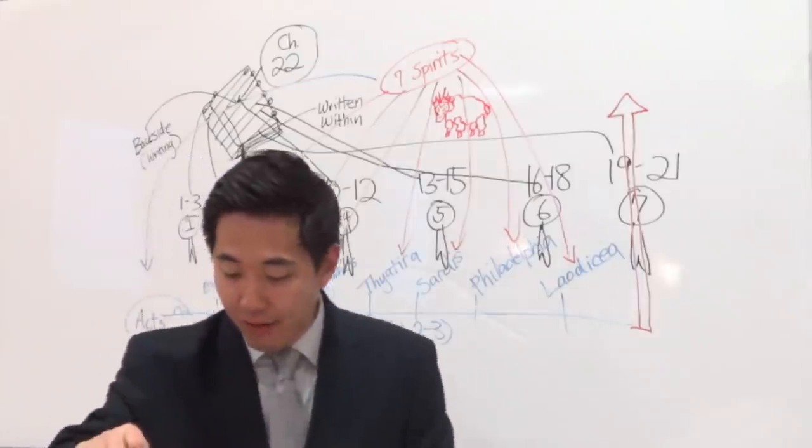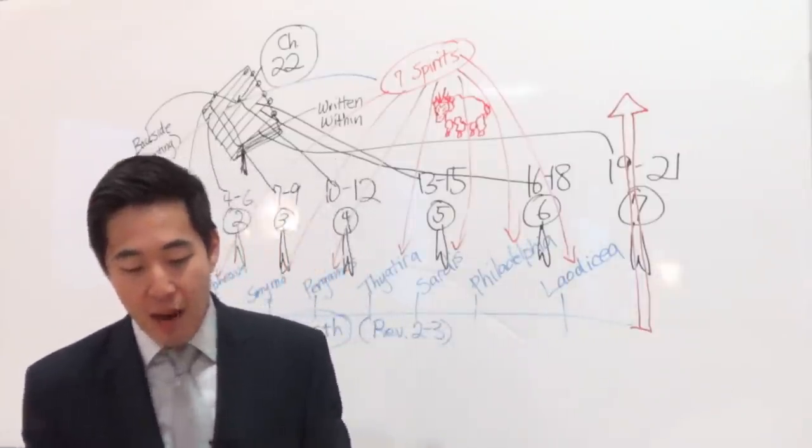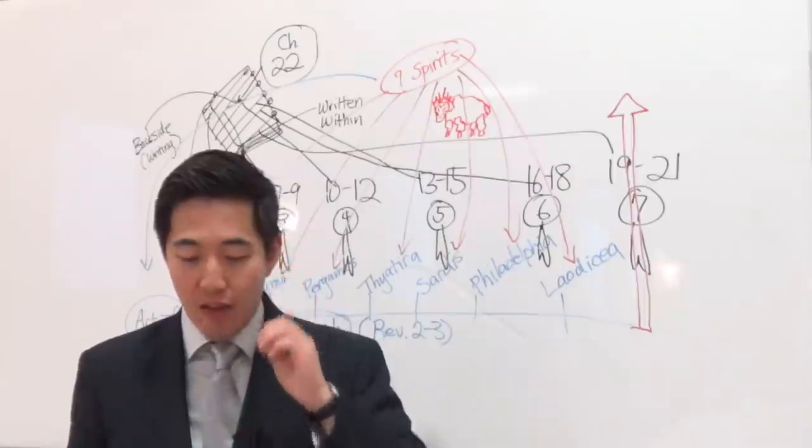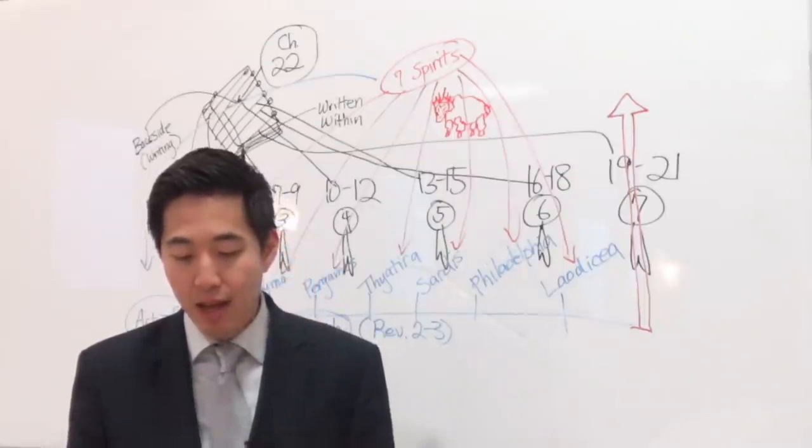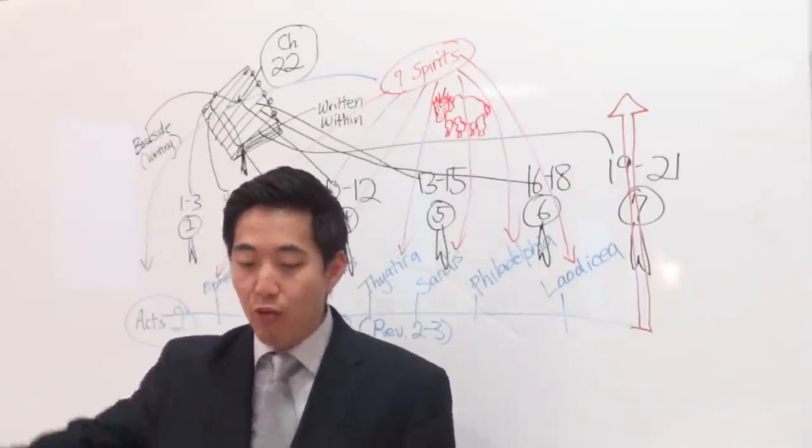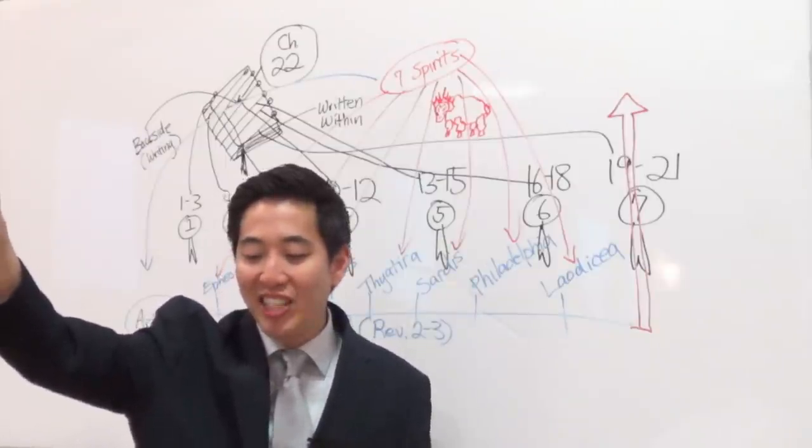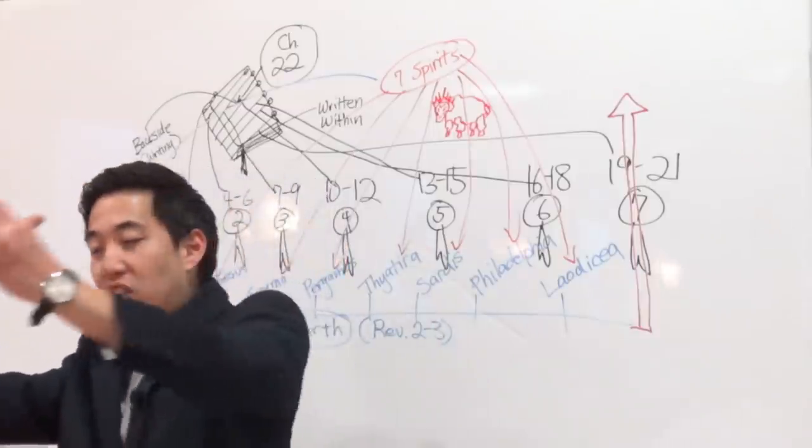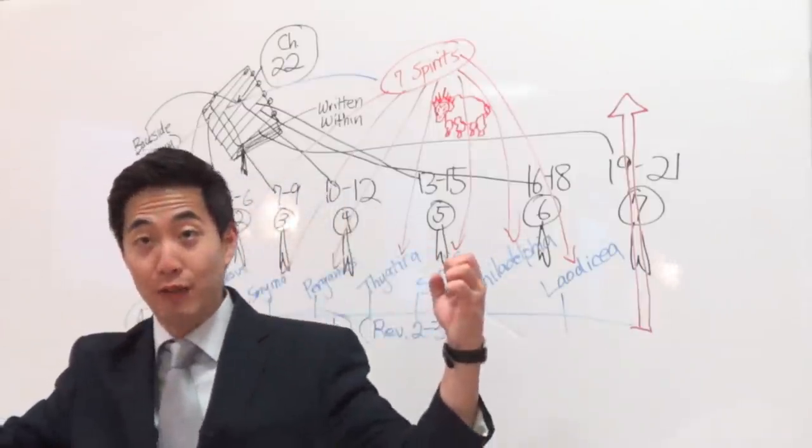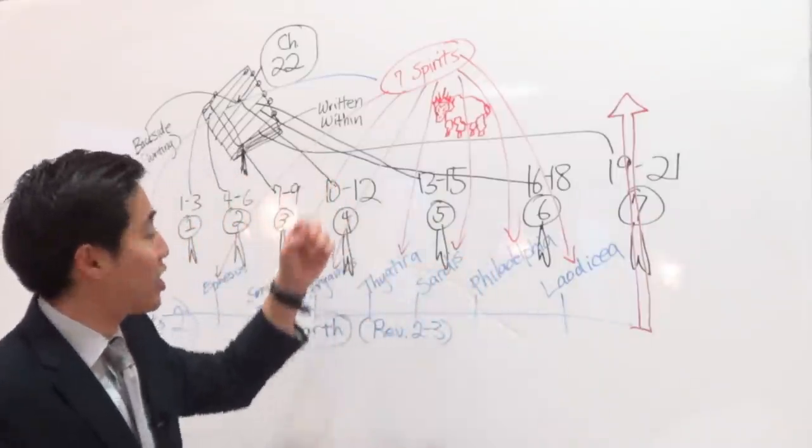All right, now let's look at Revelation 5. And he came and took the book out of the right hand of him that sat upon the throne. Remember, God the Father is sitting in this throne, and he's holding that seven-sealed book in his right hand, so Jesus comes and takes the book out of his right hand, because he's worthy, and he's going to unleash it.